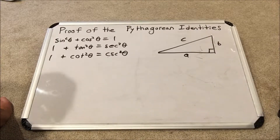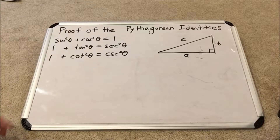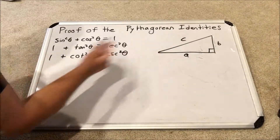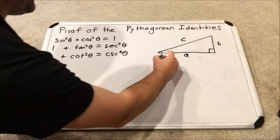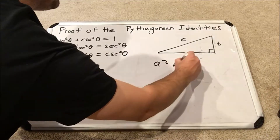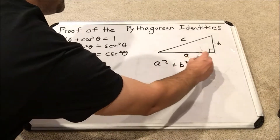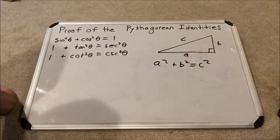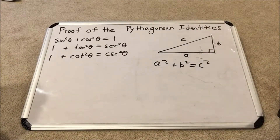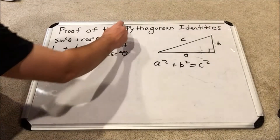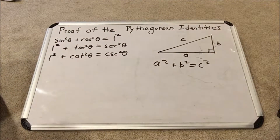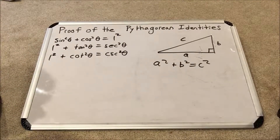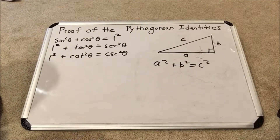Why are they called Pythagorean identities? Think of a right triangle and the Pythagorean theorem: a squared plus b squared equals c squared. If you look at all of these identities, they have the same sort of form, especially when you realize that one squared is equal to one. That's why they're called the Pythagorean identities.